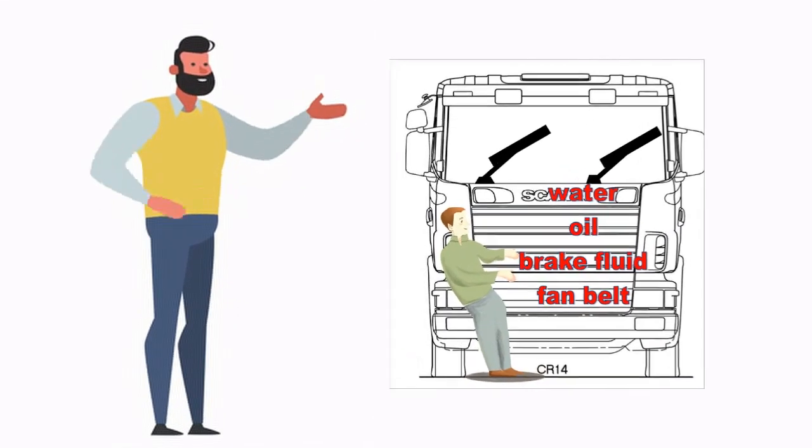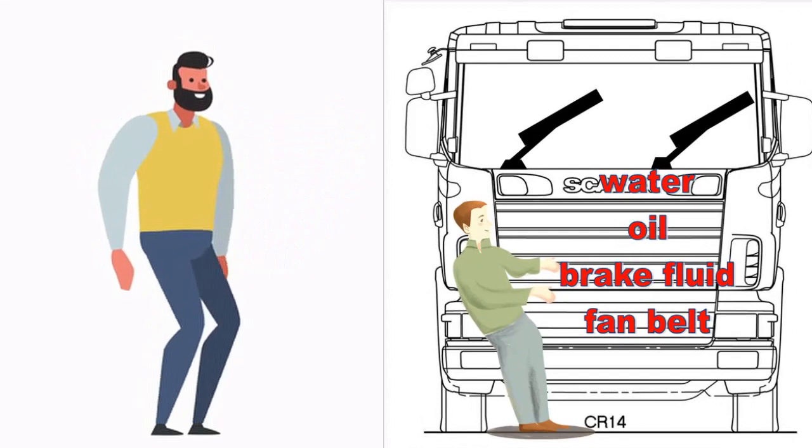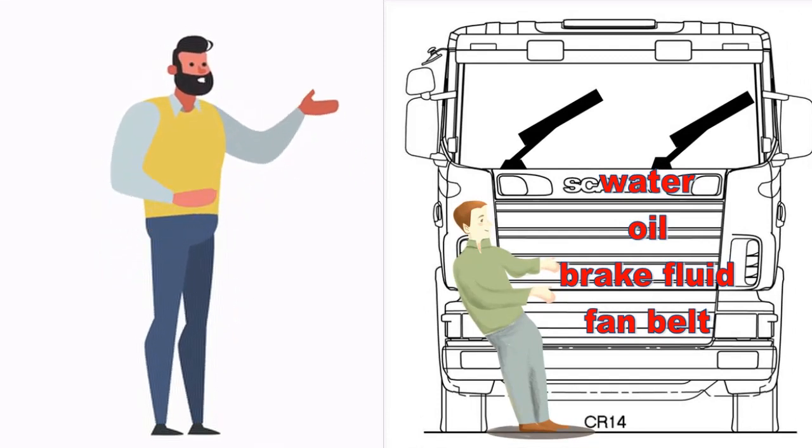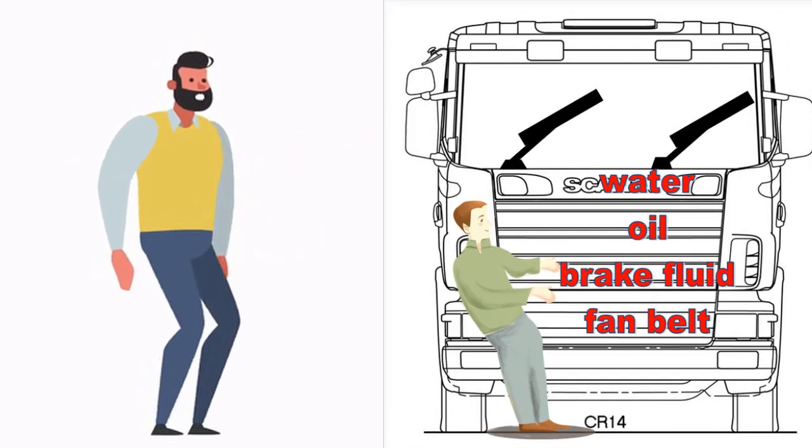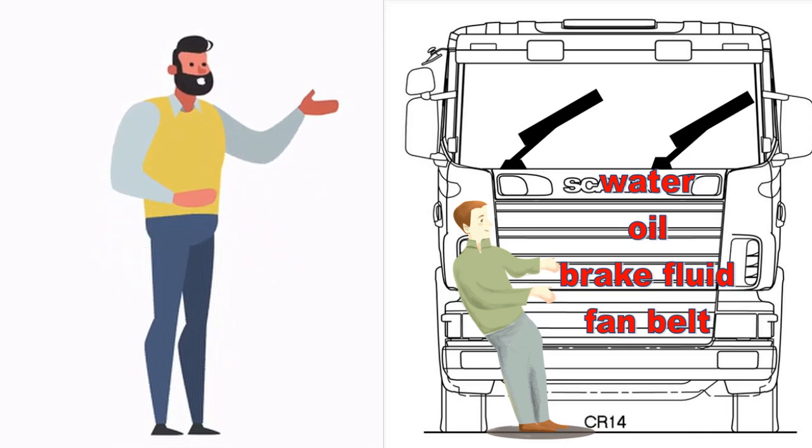You will then mention that the bonnet is closed, and that you already checked the water, oil, brake fluid, and fan belt. Also, the number plate is intact and valid and agrees with the license disc.